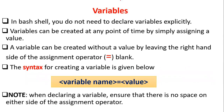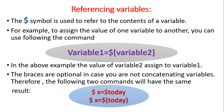Variables can be created at any point in time by simply assigning a value. A variable can also be created without a value by leaving the right-hand side of the assignment operator blank. The syntax is: variable_name=value. When declaring a variable, ensure there is no space on either side of the assignment operator. To access the value of a variable, you need to use the dollar sign symbol, which refers to the contents of the variable.